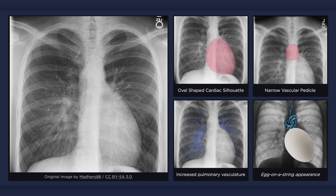The combination of an oval cardiac silhouette and a narrow vascular pedicle has been visually described as an egg on a string. Now while the combination of these findings results in a classic appearance, it is important to keep in mind that in many cases the x-ray is completely normal.